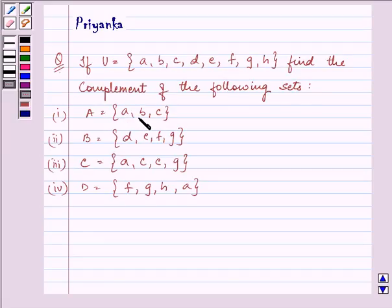A whose elements are A, B, C; B whose elements are D, E, F, G; C whose elements are A, C, E, G; and D whose elements are F, G, H, A.